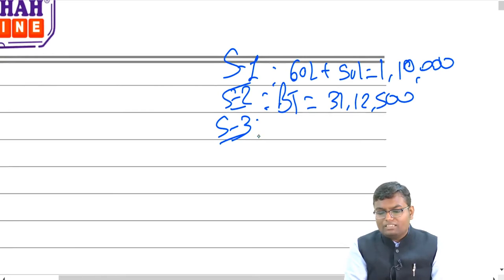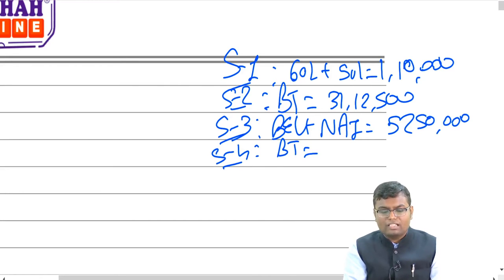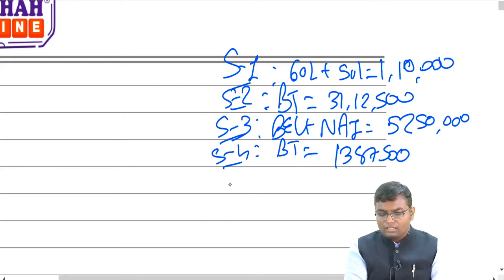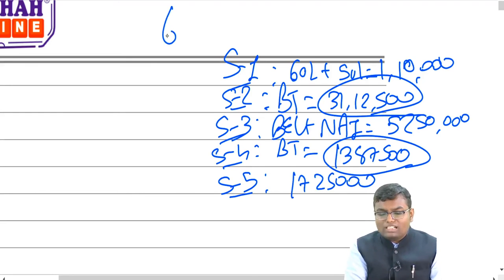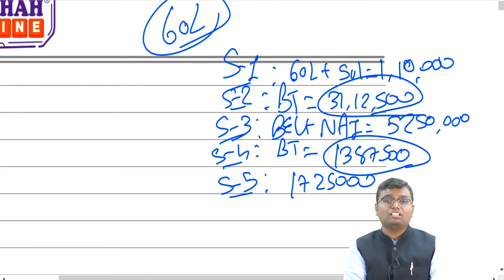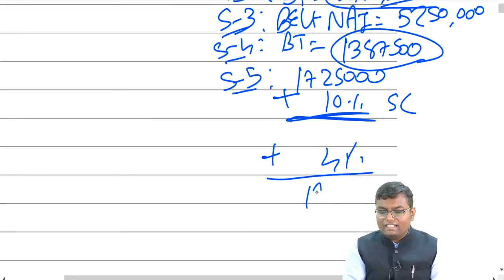Step 3: basic exemption limit plus net agricultural income = ₹2,50,000 + ₹50,00,000 = ₹52,50,000. Step 4: basic tax on ₹52,50,000 = ₹42,50,000 × 30% + ₹1,12,500 = ₹13,87,500. Final basic tax = ₹31,12,500 − ₹13,87,500 = ₹17,25,000. Total income is ₹60 lakh — more than ₹50 lakh but less than ₹1 crore — so apply 10% surcharge on basic tax. Adding 4% cess, the total tax payable comes to ₹19,73,400.